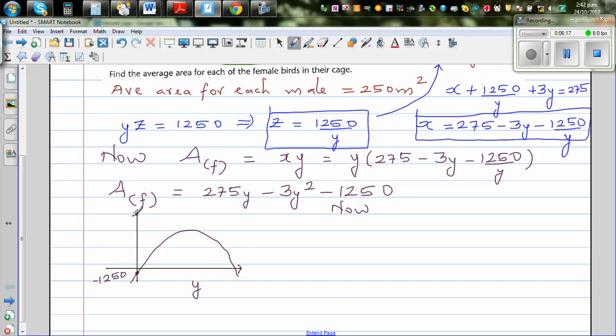Now if you differentiate this, this is a quadratic function. This will be an upside down parabola. Let me explain this graphically because we understand it graphically. Your parabola would look somewhat like this.